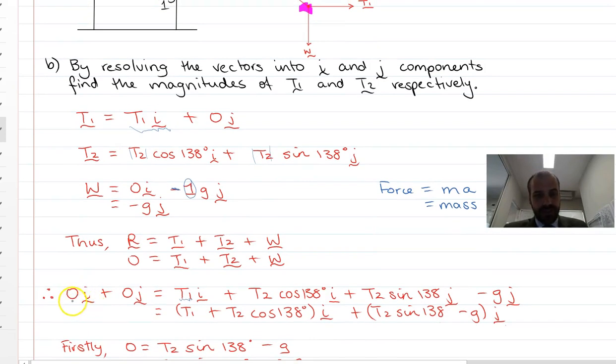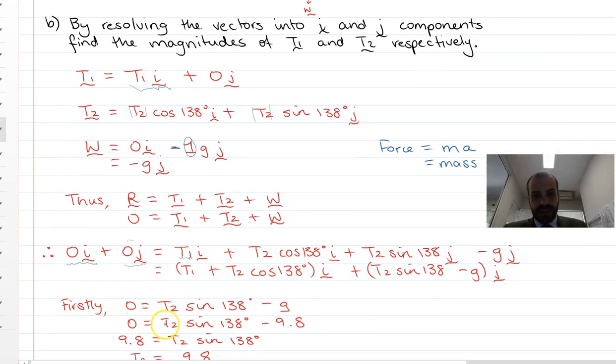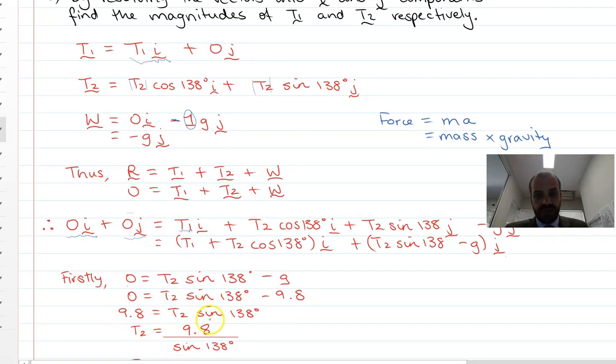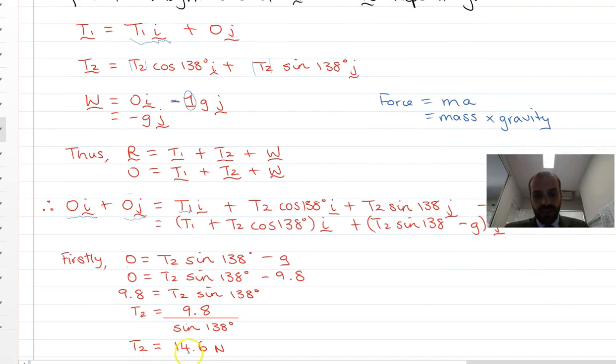And then we just need to break them up. So our i component, we can say that 0 equals, well, actually, let's do our j component first. We can say that our j component is 0 equals tension in 2 sine 138 minus g. That's tension in 2 sine 138 minus 9.8. Rearranging this, we'll get 9.8 equals tension 2 sine 138. So tension 2 equals 9.8 divided by sine 138. Tension 2 equals 14.6 newtons.